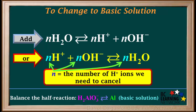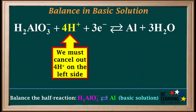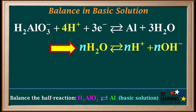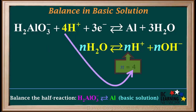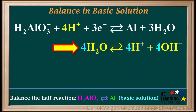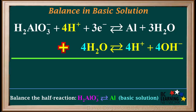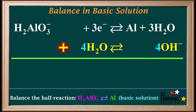N stands for the number of H⁺ ions that need to be cancelled. Going back to our equation in acid solution, we must cancel out the 4H⁺ ions on the left side. So we need to add an equation with 4H⁺ ions on the right — that is, water on the left and H⁺ and OH⁻ on the right. Because we need to cancel 4H⁺ ions, N equals 4, so 4 is the coefficient we use for all three species in this equation. Make sure they all have the same coefficient. When we add these two equations together, the 4H⁺ appear on opposite sides and can be cancelled.